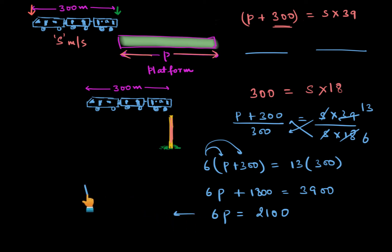And from here, we can write P is equal to 2100 upon 6. Now let's divide numerator and denominator by 3. So 3, 2s are 6 and 3, 7s are 2100, 700. And by 2, half of 700 is 350. So this length of this platform P is actually 350 meters.